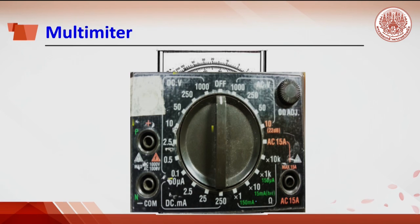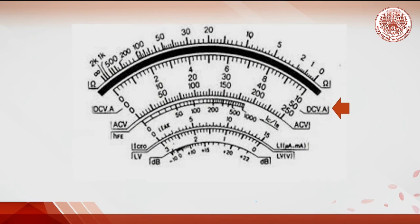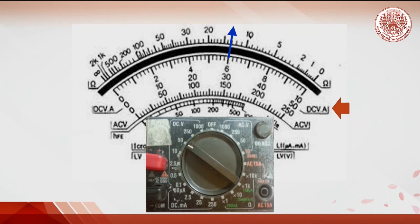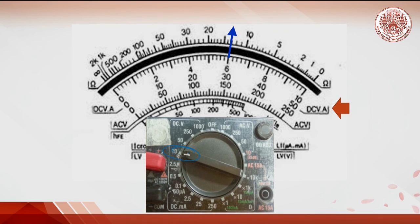The measuring range starts from 1000 down to 0.1 of the full scale. The scale being read is on DC voltage. The full scale can be maximum at 10, 50, and 250. For example, if the pointer is at a certain position and the measuring range is 250, the EMF recorded is 150 volts. If the measuring range is 50, the full scale is 50, so the reading is 30 volts. When the range is at 10, meaning the full scale is 10, we get an EMF of 6 volts.